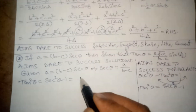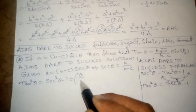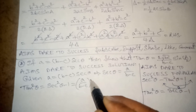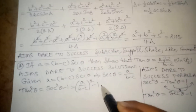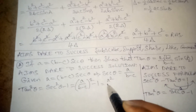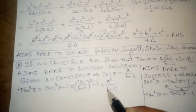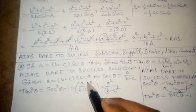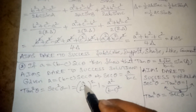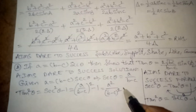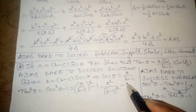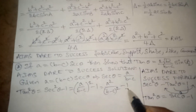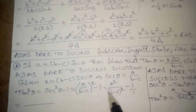Here the secant theta value is a divided by (b minus c), so secant squared theta is (a divided by (b minus c)) squared, which equals a squared divided by (b minus c) squared, minus 1. We can write 1 as 1 over 1, so we take the LCM, which is (b minus c) squared.